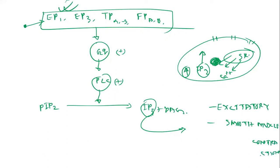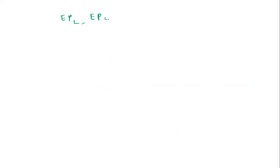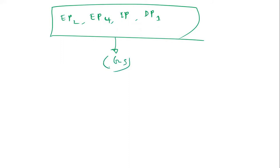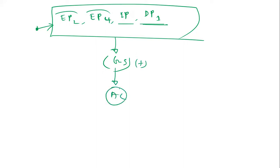Now, EP2, EP4, IP, and DP1 — these receptors are Gs coupled. Whenever the agonist binds to these corresponding receptors — prostaglandin E2 for EP2 and EP4, prostaglandin I2 for IP, and prostaglandin D2 for DP1 — the Gs protein will be activated. Gs protein then activates the adenylyl cyclase enzyme.